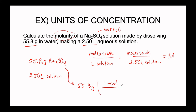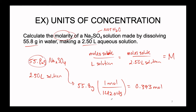Using the periodic table, we find the molar mass of sodium sulfate to be 142.04 grams per mole. Taking 55.8 grams divided by 142.04 grams per mole gives us 0.393 moles of sodium sulfate. It may seem like a large mass, but because sodium sulfate is a massive compound with a large molar mass, we don't actually have that many moles of substance.